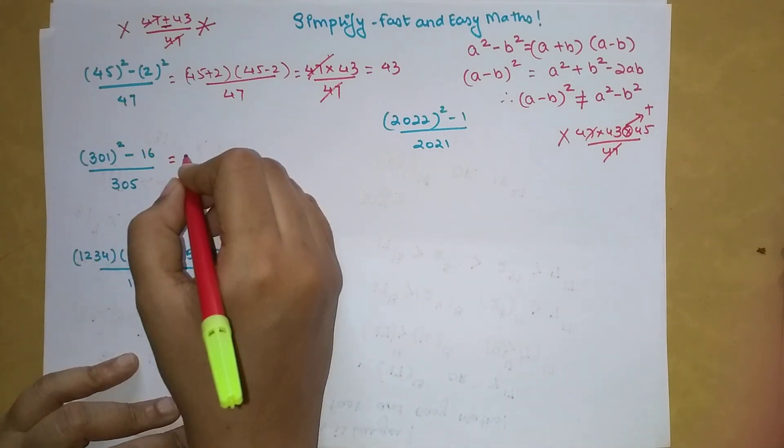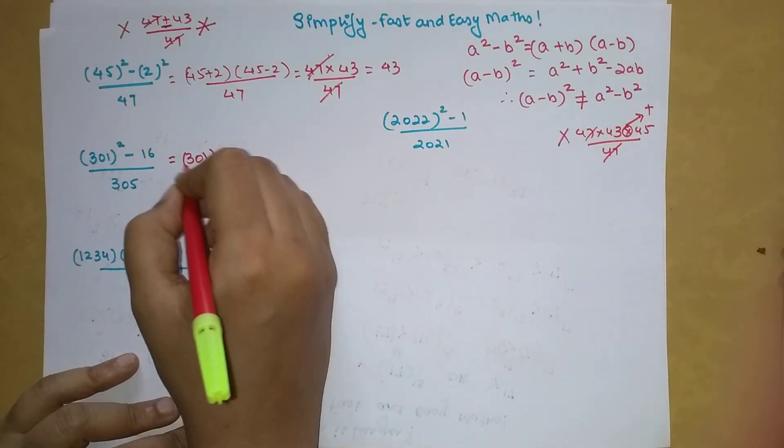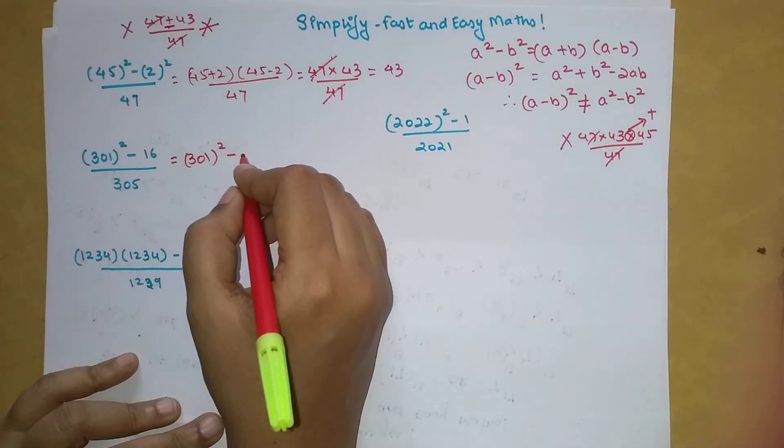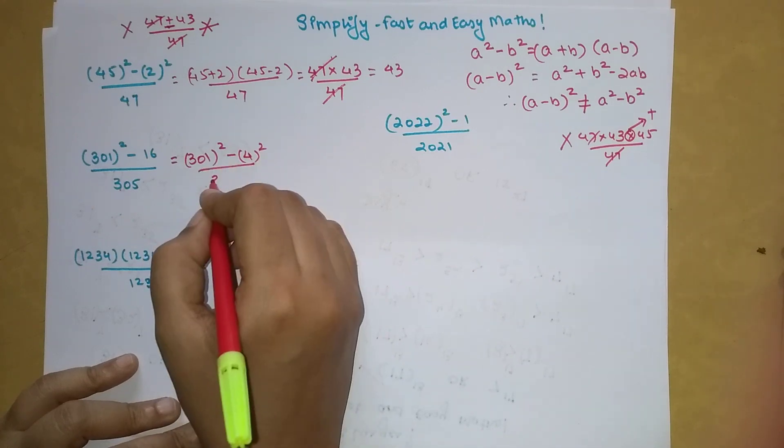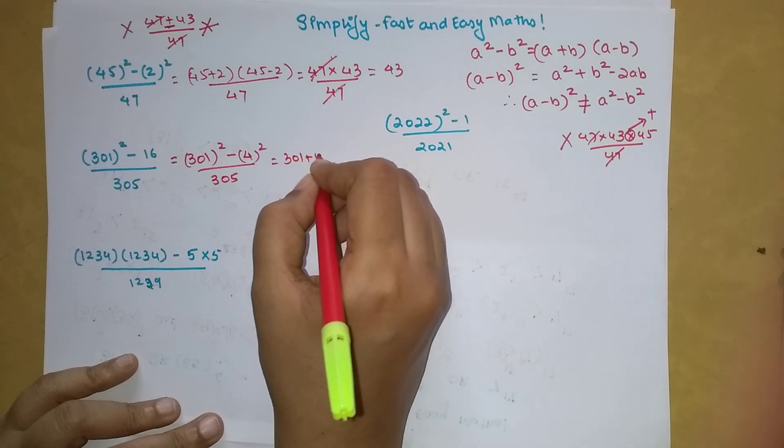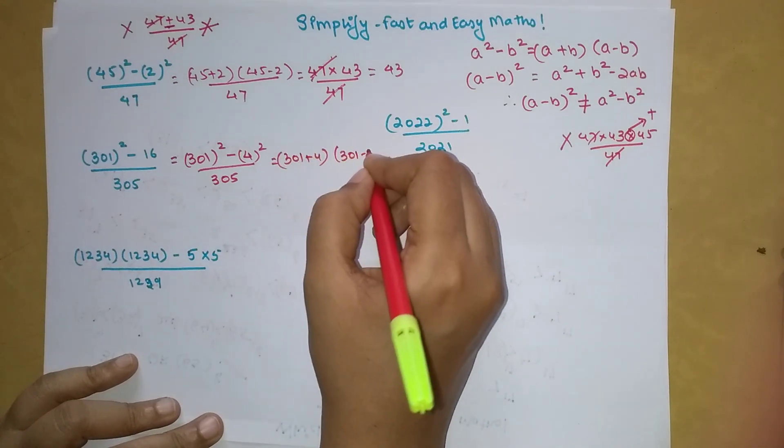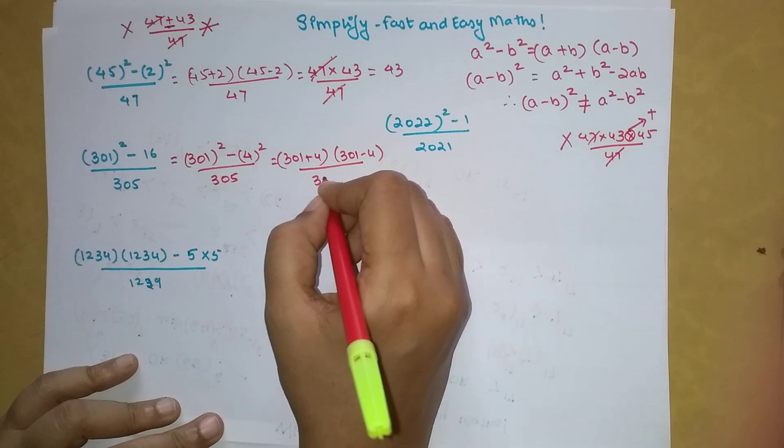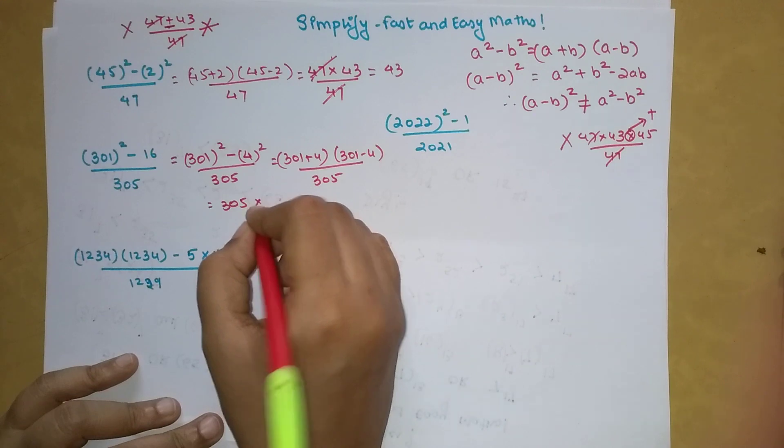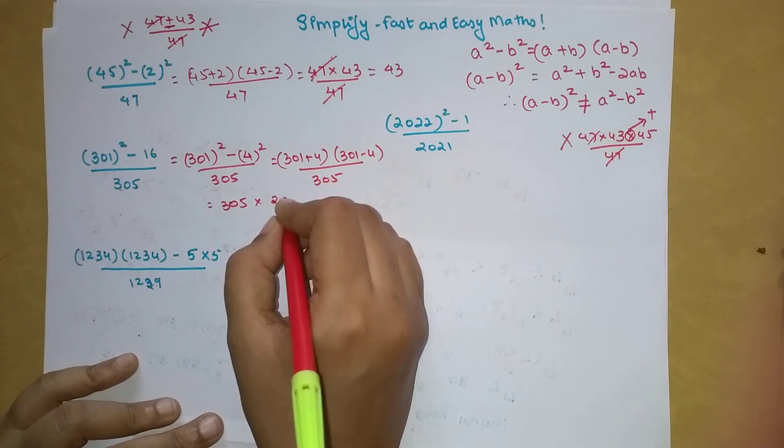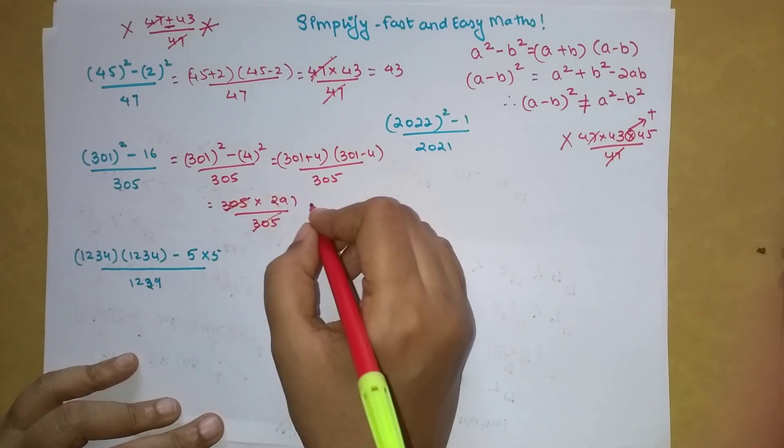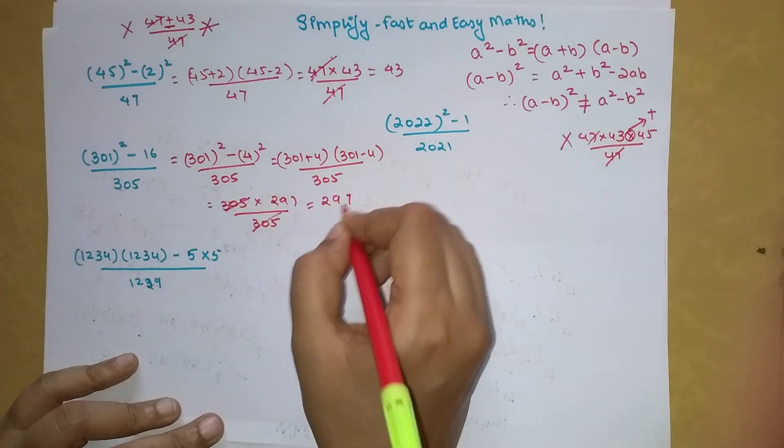So now in this next scenario, we have 301 the whole square minus 16. We do not have a square, but we know that 16 is nothing but 4 square upon 305. Now using the same expansion, I will write 301 plus 4 and 301 minus 4 upon 305. So 301 plus 4 is 305, into 301 minus 4 which is 297, upon 305. So this and this will cancel. We are left with just 297.